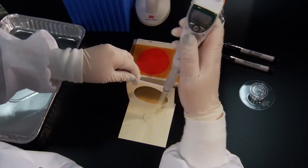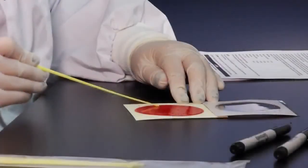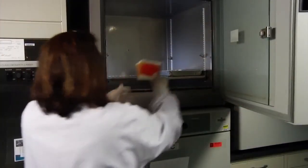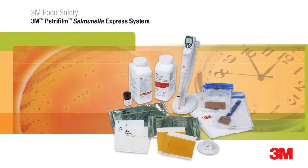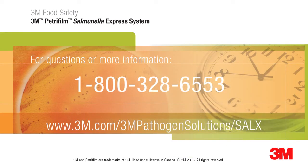3M food safety provides more solutions to help you save labor time, reduce costs and support the reliability of your quality assurance efforts. And when you use the 3M Petrifilm Salmonella Express system and other 3M food safety products, you have a reliable partner for technical and customer services. For answers to your questions or for more information on how 3M food safety can help increase lab efficiency in your facility, please contact us at 1-800-328-6553 or visit our website at www.3m.com/3Mpathogensolutions/SALX.